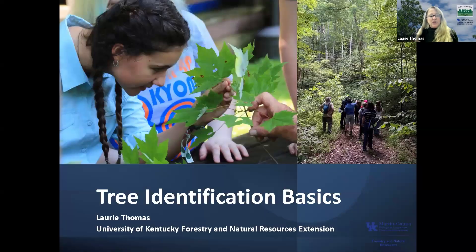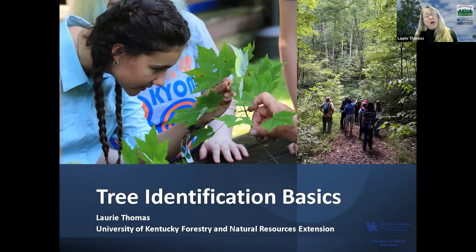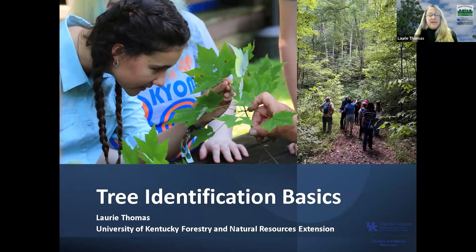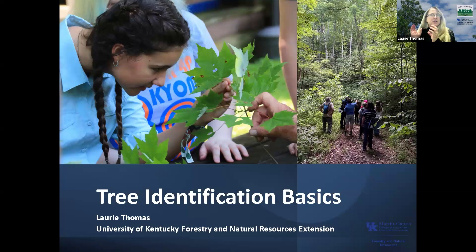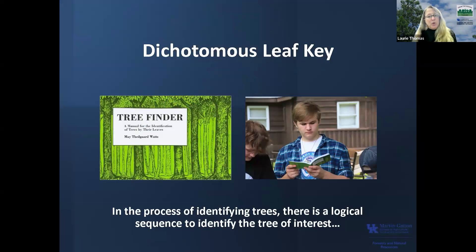Today we're going to go over some of the tree identification basics. Kentucky has over 120 different tree species, which can make it a little challenging to identify trees, but there are tools out there that can help. We're going to walk through learning how to look at some of the main characteristics of a tree and how to use those characteristics with a dichotomous key to help you identify the species you're standing in front of.